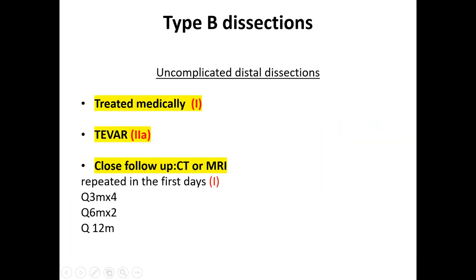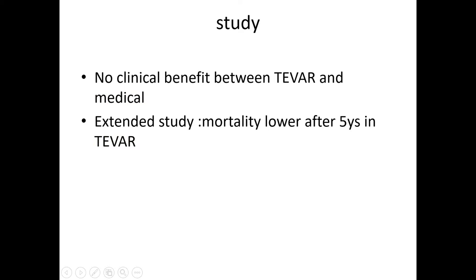In Type B dissection that is uncomplicated, we treat medically. TEVAR can also be done, but studies found no significant clinical benefit in mortality between TEVAR and medical treatment in uncomplicated Type B. However, five-year mortality is lower with TEVAR if performed. Close follow-up with CT or MRI is essential: every three months in the first year, every six months in the second year, and then annually. This is for dissections distal to the left subclavian artery that are uncomplicated.